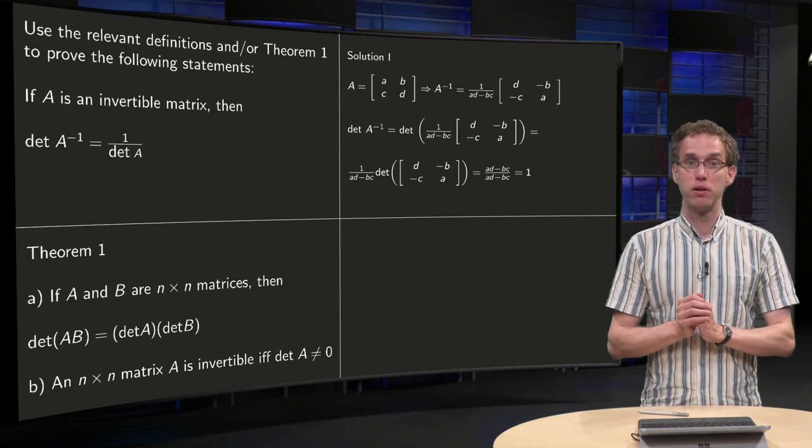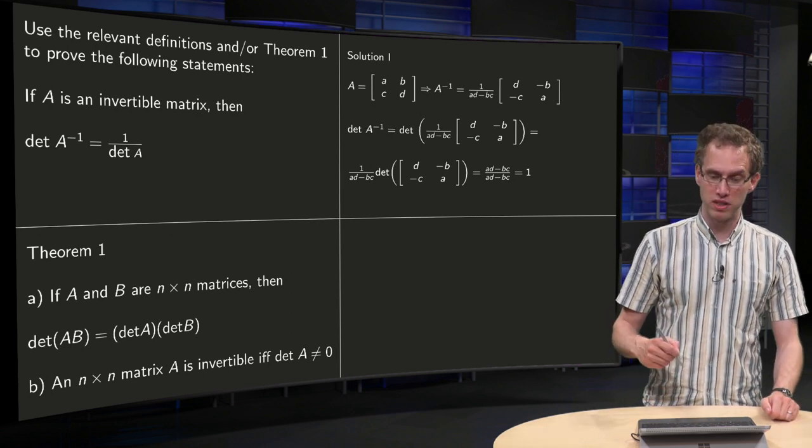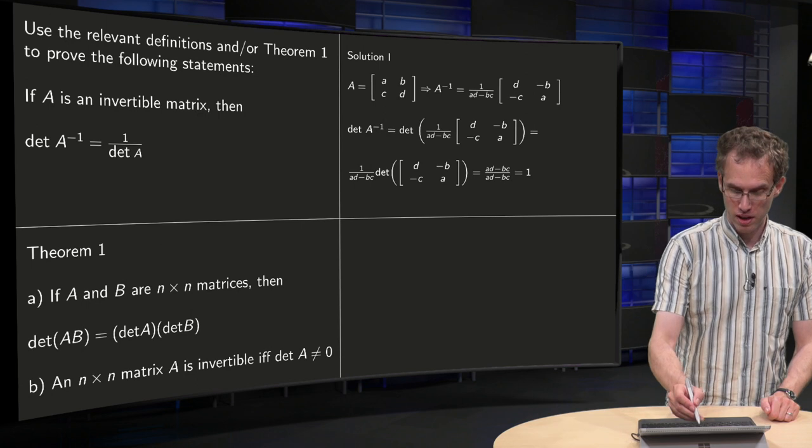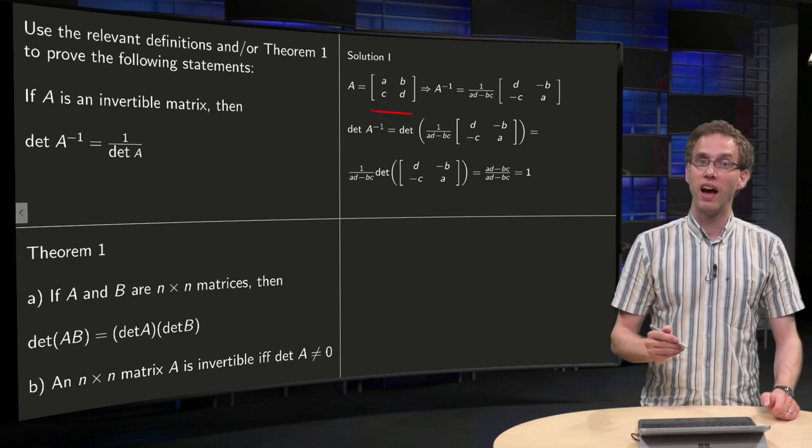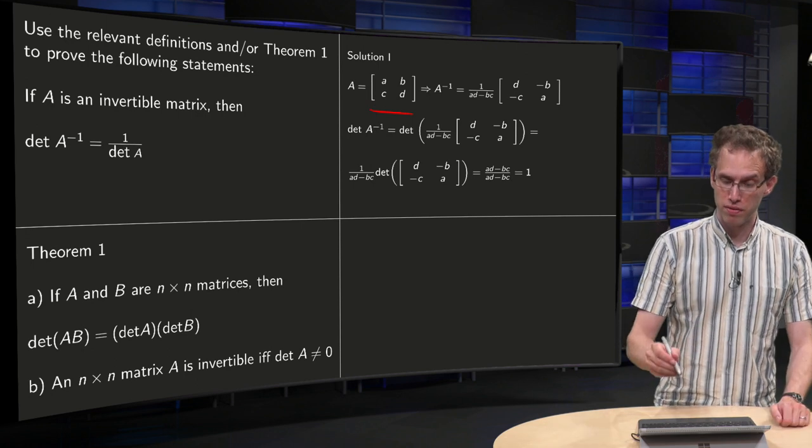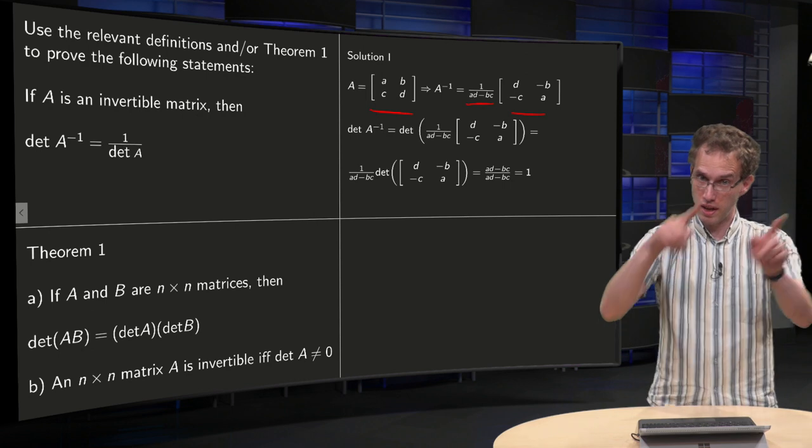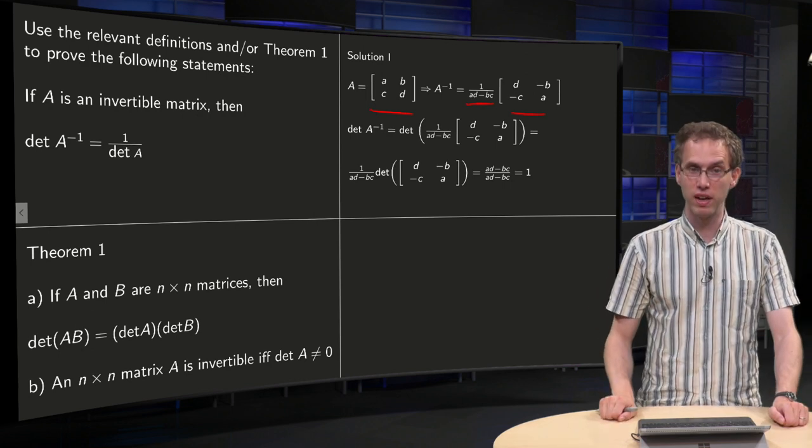Now, first possible proof. What can we try? Well, suppose we have some matrix A equals [a,b; c,d] in general. Then we can find its inverse: 1 over (ad minus bc), and we change the a and the d, minus for the minus b and minus c.